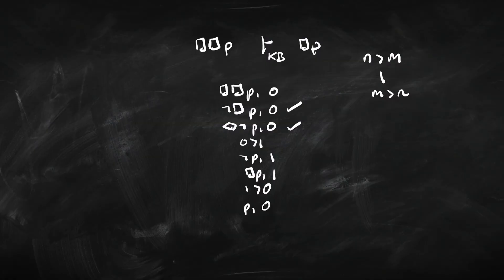That's all the rules applied, nothing more we can do. That's a finished open branch. And when we've got a finished open branch, we can use it to build a counter model. A counter model is one where there's a world where the premise is true but the conclusion is false, showing us why the inference doesn't hold — the premise can be true without the conclusion being true.